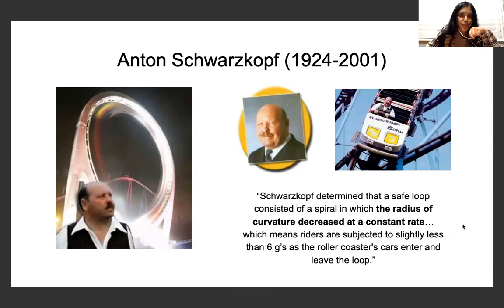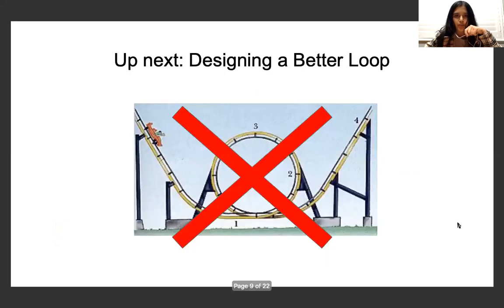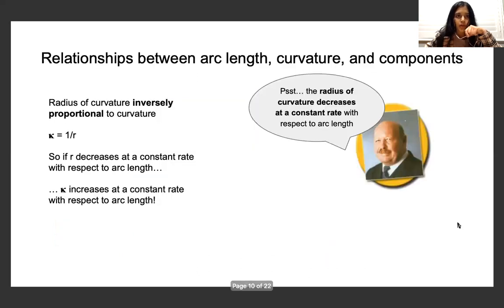Which brings us to Anton Schwarzkopf, who was a mechanical engineer and roller coaster designer who found in his research that the radius of curvature decreases at a constant rate in a safe loop. And this ensures that riders are subjected to less than 6Gs throughout the loop. When we look at relationships between arc length, curvature, and the components of our function, we know that the radius of curvature is inversely proportional to curvature, meaning that if R decreases at a constant rate with respect to arc length, curvature increases at a constant rate with respect to arc length.